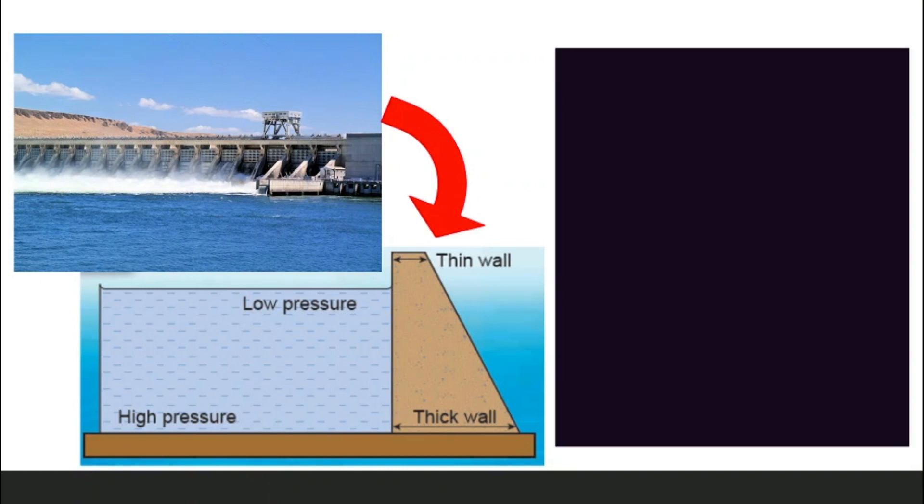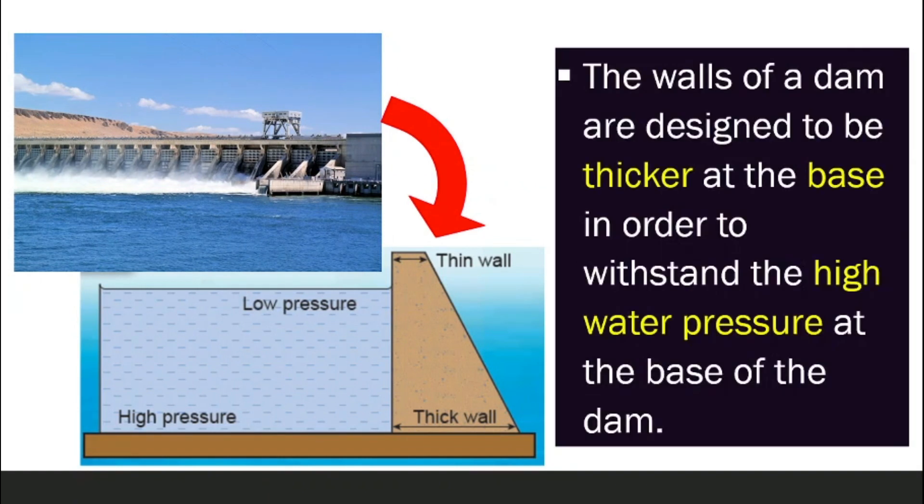And this is the reason why when you build a dam, it is designed that the wall of the dam is a lot thicker at the bottom. Why? Because the water pressure at the bottom is a lot higher compared to the wall on top. This is so that the dam will be able to withstand the water pressure. Or else, what happens is at the base, the higher pressure of the water might crush over the dam wall.